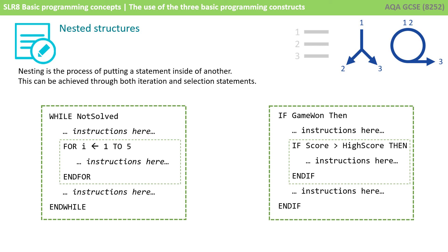In a similar way, you can have selection statements nested inside each other. On the right here, we see if the game is won, then run some code. We then hit an inner nested selection statement. If score is greater than high score, then run some additional code. We then exit to the outer selection statement.